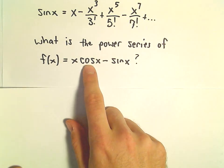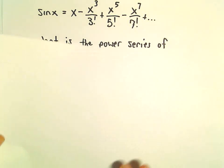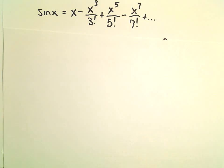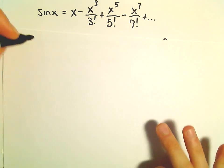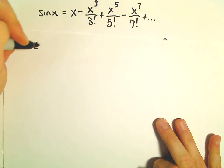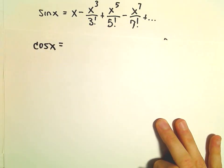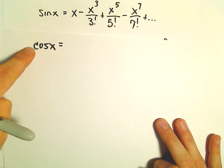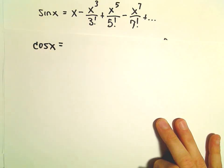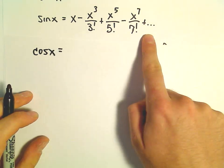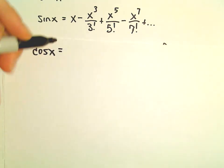The first thing I'm going to do is find a power series representation for cosine x. We know that if we take the derivative of sine x, we get cosine x. So I'm just going to take the derivative of the right side.